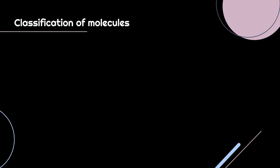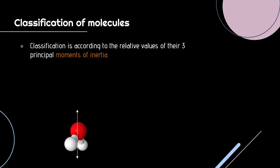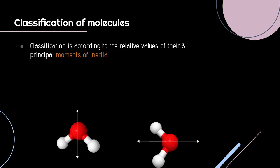Here we classify molecules based on their moments of inertia. You could have a molecule rotating about this axis or a molecule rotating about this axis. You can have three perpendicular axes in a 3D space. Based on the values of moments of inertia with respect to these three axes, the molecules can be classified.